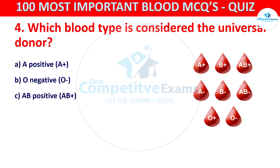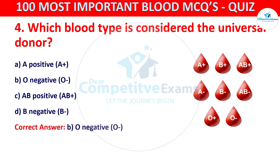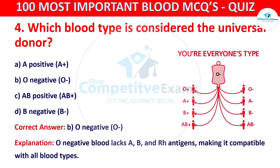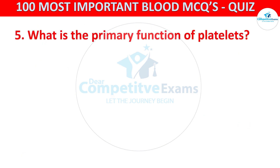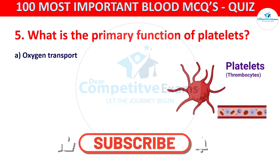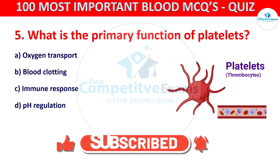The correct answer is B, that is O negative. O negative blood type lacks A, B, and Rh antigens, making it compatible with all blood types. Question number five: what is the primary function of platelets? Your options are oxygen transport, blood clotting, immune response, or pH regulation.